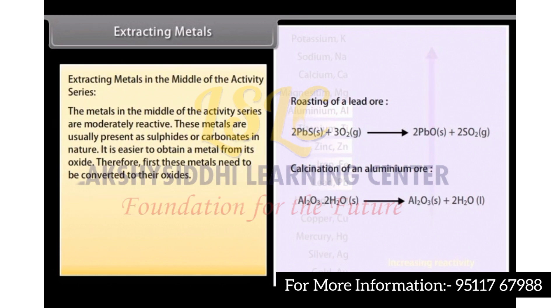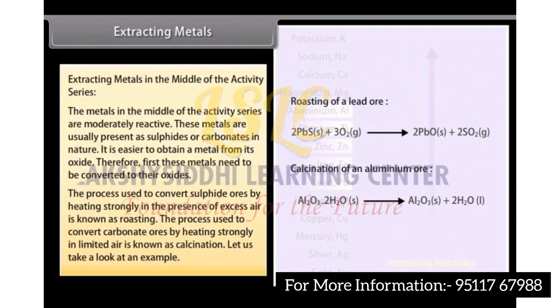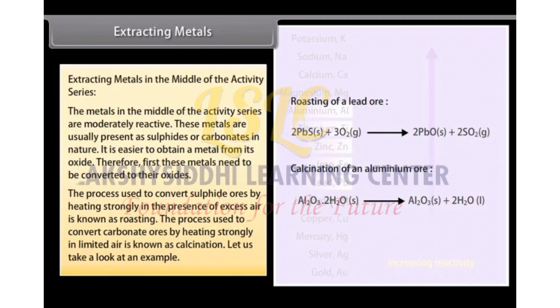first, these metals need to be converted to their oxides. The process used to convert sulfide ores by heating strongly in the presence of excess air is known as roasting. The process used to convert carbonate ores by heating strongly in limited air is known as calcination.